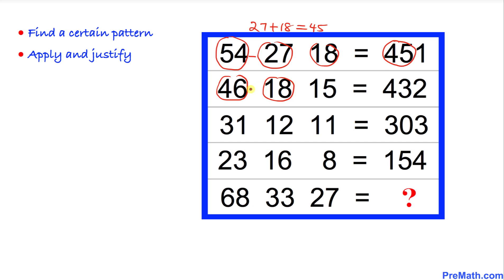Then we are going to add 15 to 8 and we are going to get 43. Likewise, 31 minus 12 is going to give us 19, and then plus 11 is going to give us 30. Similarly, 23 minus 16 is going to give us 7, and then plus 8 is going to give us 15.